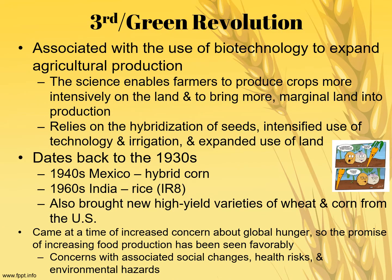The third agricultural revolution is also known as the Green Revolution. It really starts in the 1950s, though it dates back to the 1930s. It is associated with the use of biotechnology to expand agricultural production, enabling farmers to produce crops more intensively and bring more marginal land into production. The Green Revolution relies on hybridization of seeds — mainly GMOs — intensification of technology, irrigation, expanded use of land, and chemical pesticides and fertilizers. The biggest success story happened in the 1960s in India with golden rice, feeding a lot of mouths during the period of the largest population growth in the world.